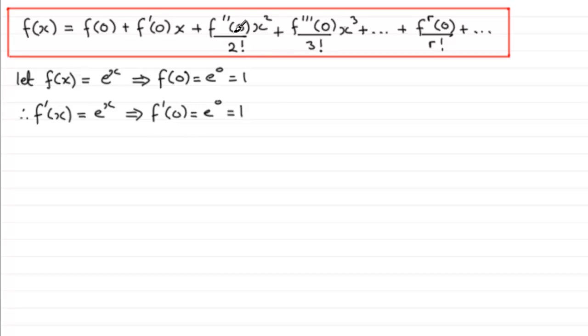We next need to work out what the second differential is going to be, f double dash x or f two prime if you like. Well if we differentiate f dash x with respect to x we get e to the x. And again it follows that f double dash of zero, that's going to be e to the zero, in other words one.